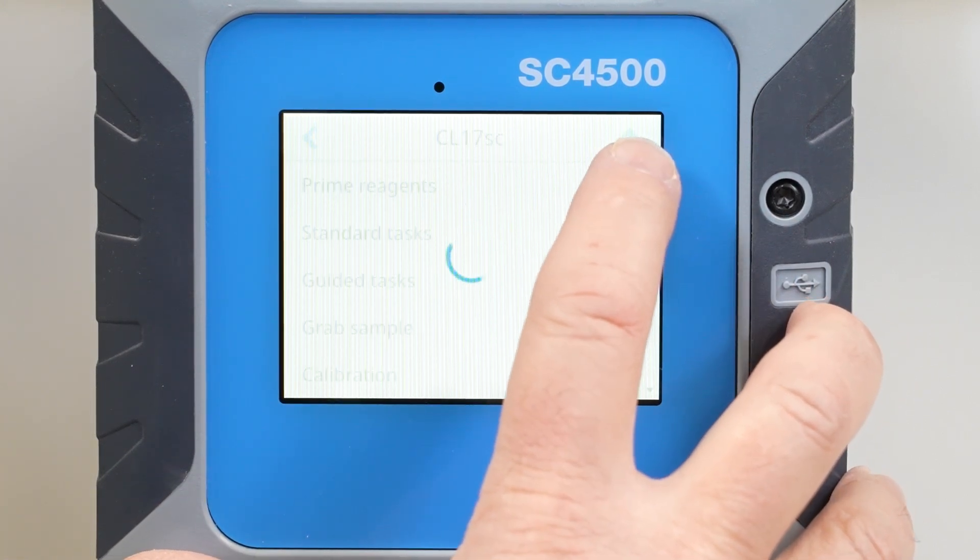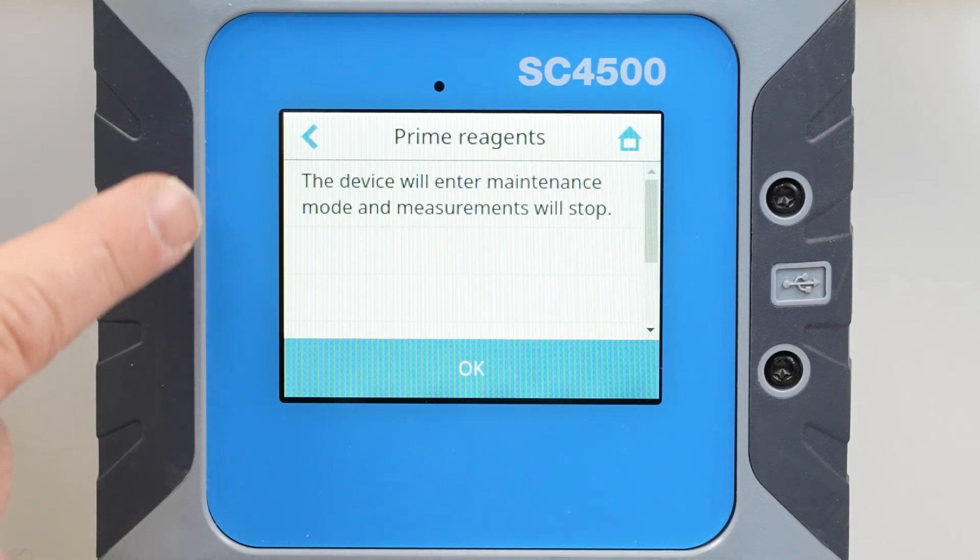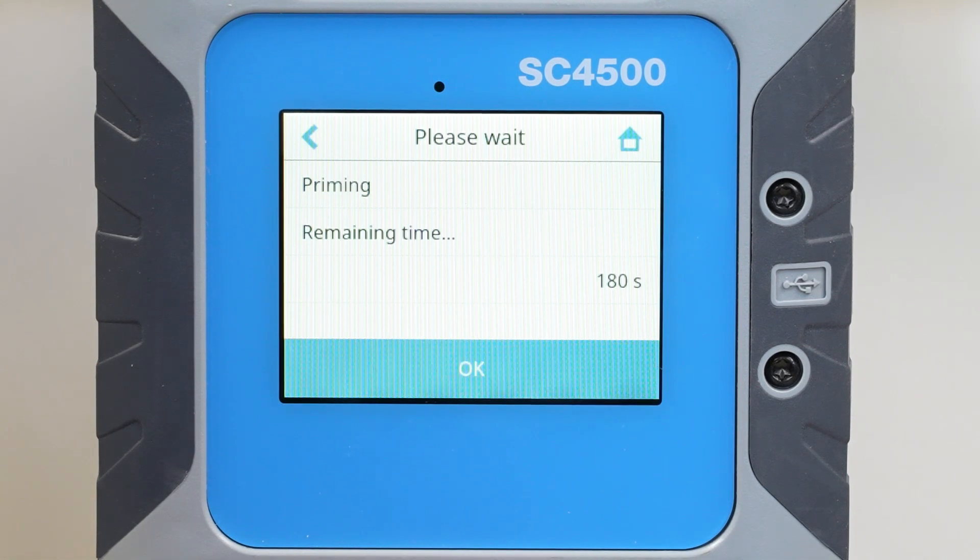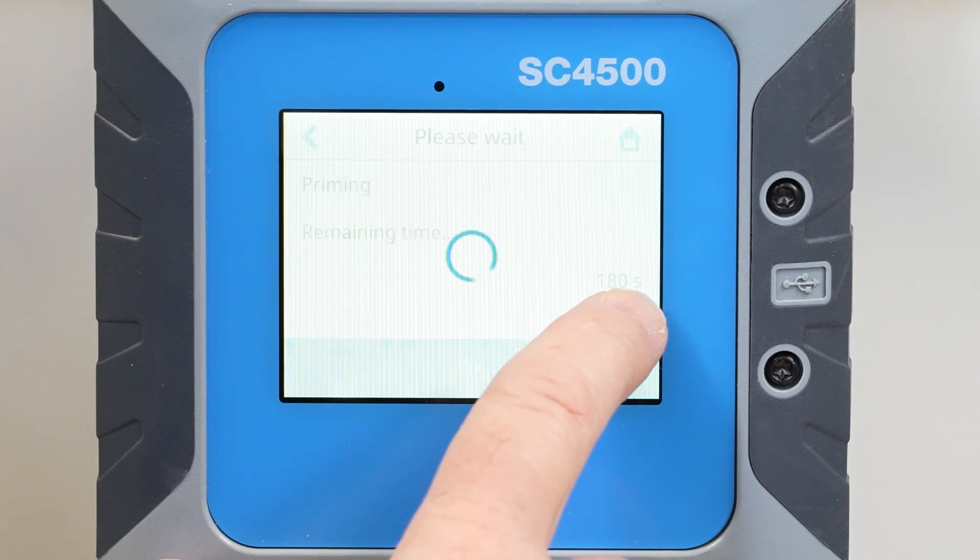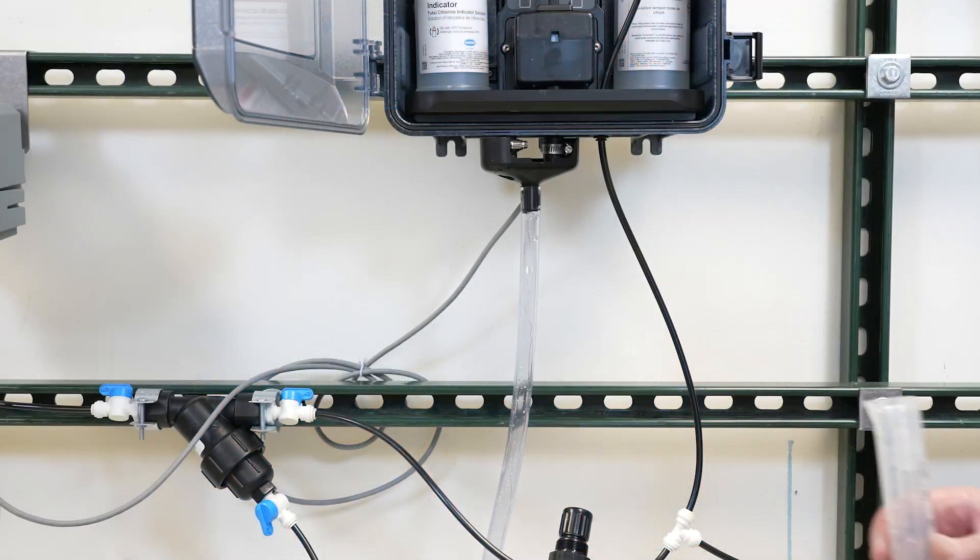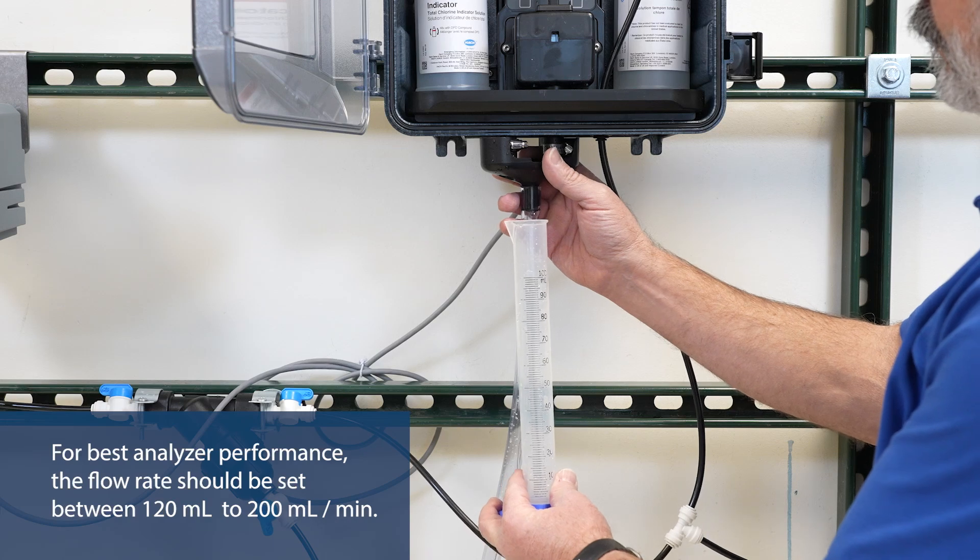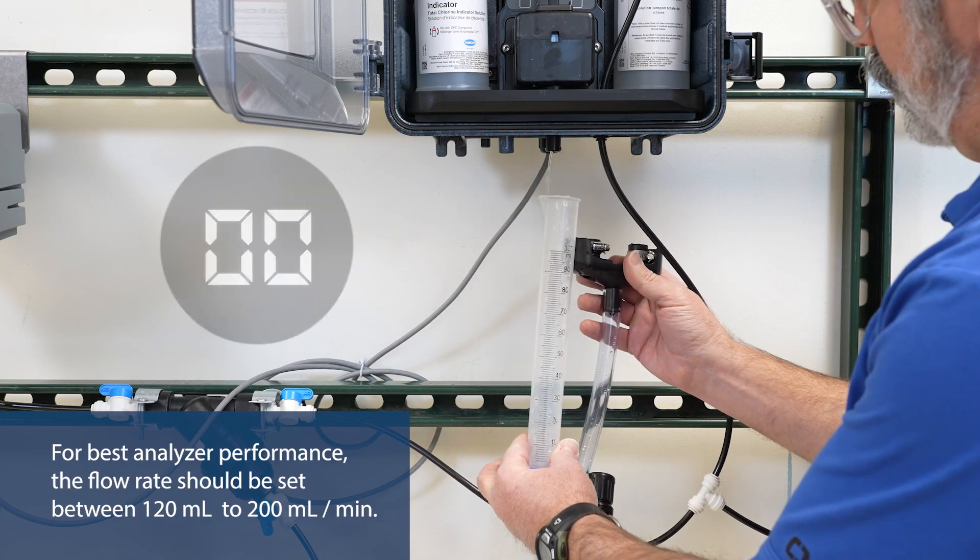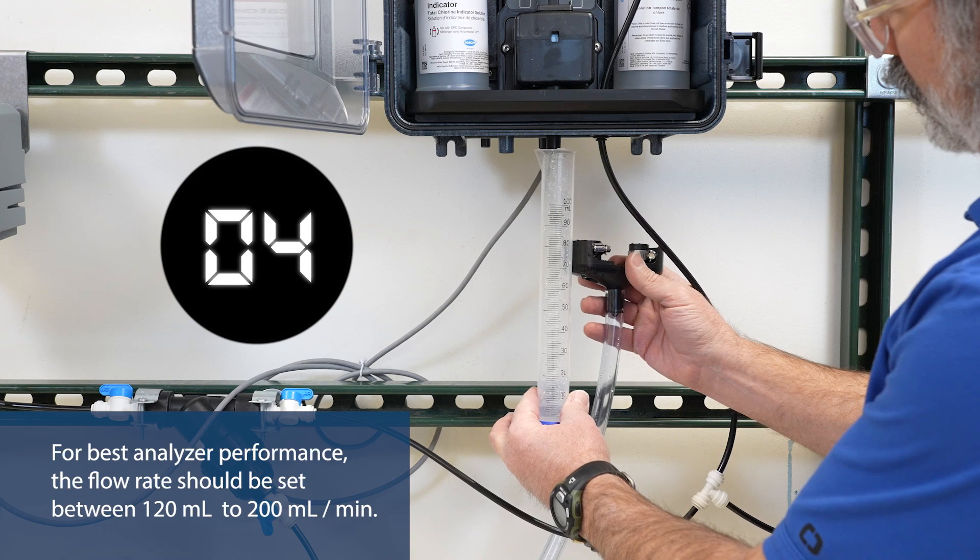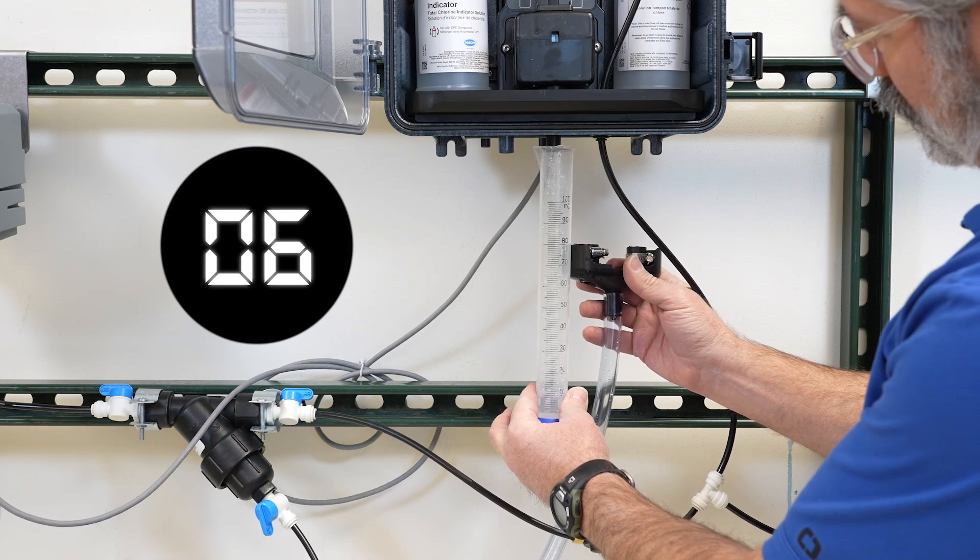Setup and prime the reagents. For best analyzer performance, the flow rate should be set between 120 milliliters to 200 milliliters per minute. Measure the flow at the drain.